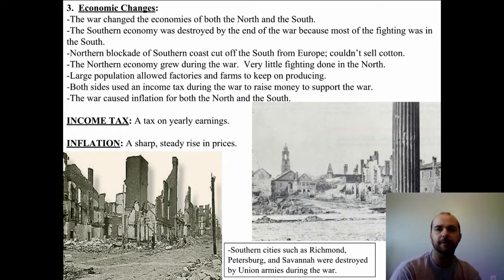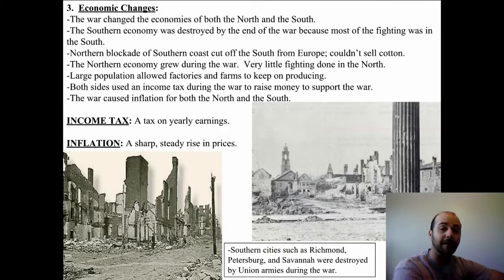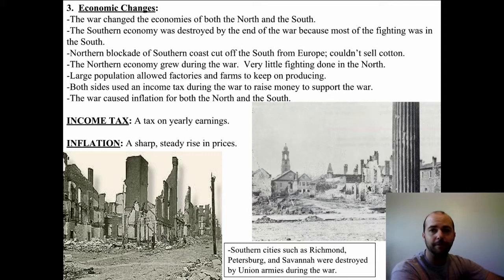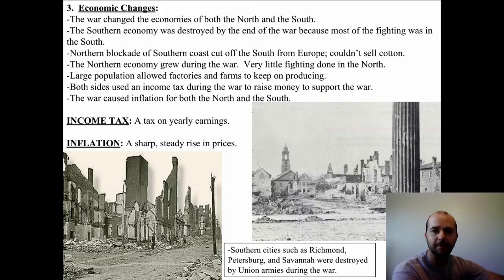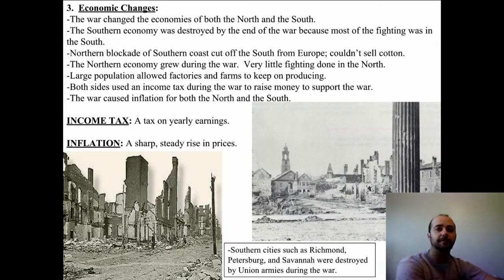The rails going to Atlanta were twisted and looked like pretzels. Basically, there was no recovering for these cities without a lot of investment. The North blockaded the South and cut off trade with Europe — with France and England — so the South couldn't sell their cotton. Those buyers went elsewhere, and those relationships had to be rebuilt.